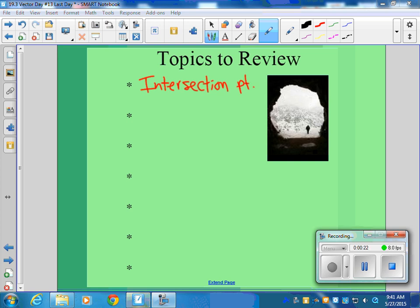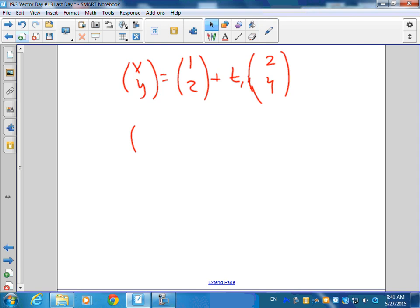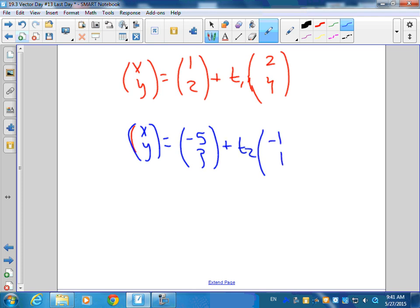And when we're talking about different times, different times is the easiest problem to make up because to make them hit at the same time is actually quite difficult. But if you look at, let's say you have an xy equal to (1, 2) plus t₁ (2, 4). Then I'm going to have another line. Let's say xy, and it's going to start at a different point, like (-5, 3), and it's going to go at (-1, 1).